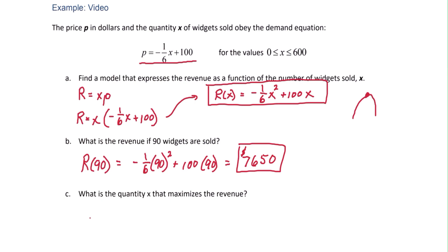To find the vertex, we use x equals negative b over 2a. So negative b, b in the r function is 100 over 2 times a, which is negative one-sixth. And this gives us 300. So that's 300 widgets.